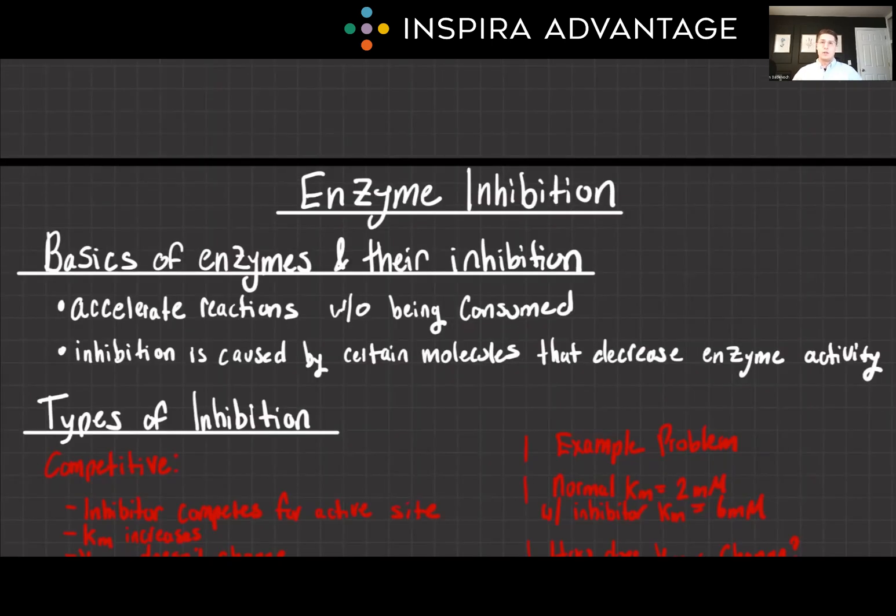Enzymes accelerate chemical reactions in the body without being consumed. Inhibition occurs when certain molecules decrease enzyme activity, playing a crucial role in regulating different metabolic pathways. There are various types of enzyme inhibition you need to know for the MCAT, and each of them have unique characteristics and effects on enzyme kinetics. We're talking KM and different VMAXs.